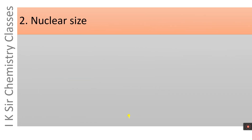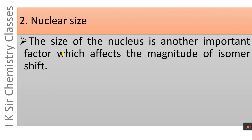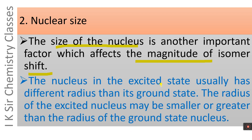The second factor affecting isomer shift is nuclear size. The size of the nucleus is another important factor which affects the magnitude of the isomer shift. The nucleus in the excited state generally has a different radius than its ground state, and this radius may be smaller or greater than that of the ground state nucleus.